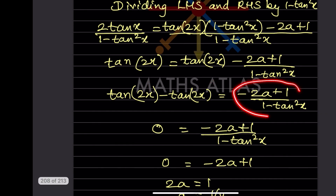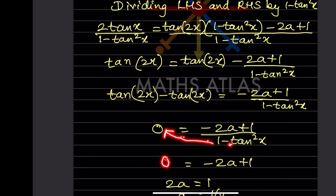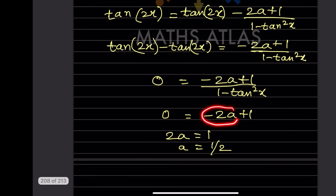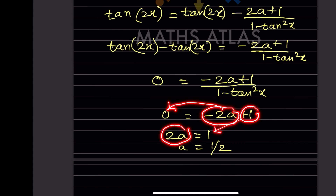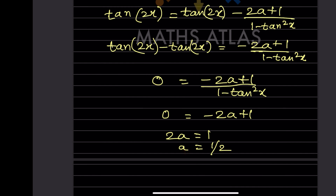After cancellation, tan2x = -2a + 1. Since tan2x = tan2x, this simplifies so that -2a is moved over, giving 2a = 1, and therefore a = 1/2.